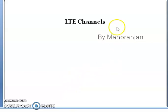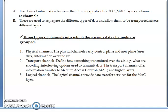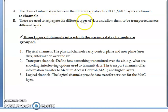Hello friends, good morning. Today we are going to cover LTE channels and the function of the channels. What are channels? The flow of information between the different protocol layers — that is, the flow of information between your RLC, MAC, PDCP, and RRC layers — is known as a channel. Channels are used to segregate the different types of information and flow that information to the different layers.